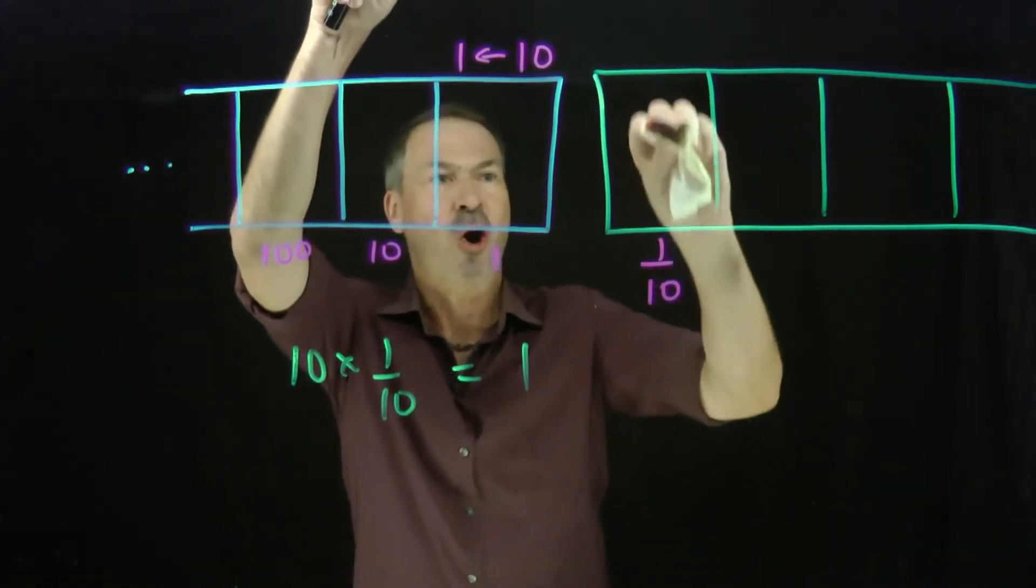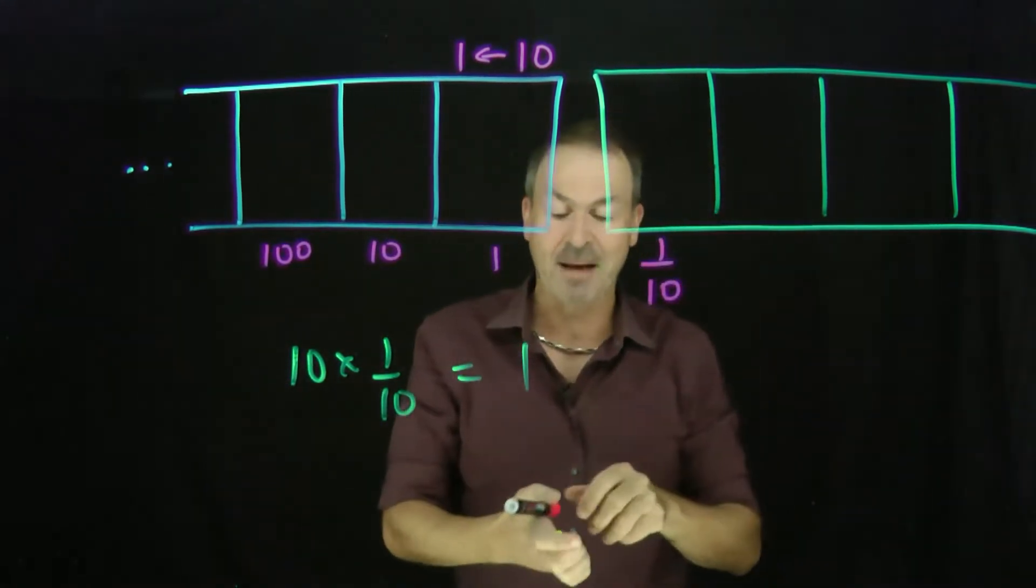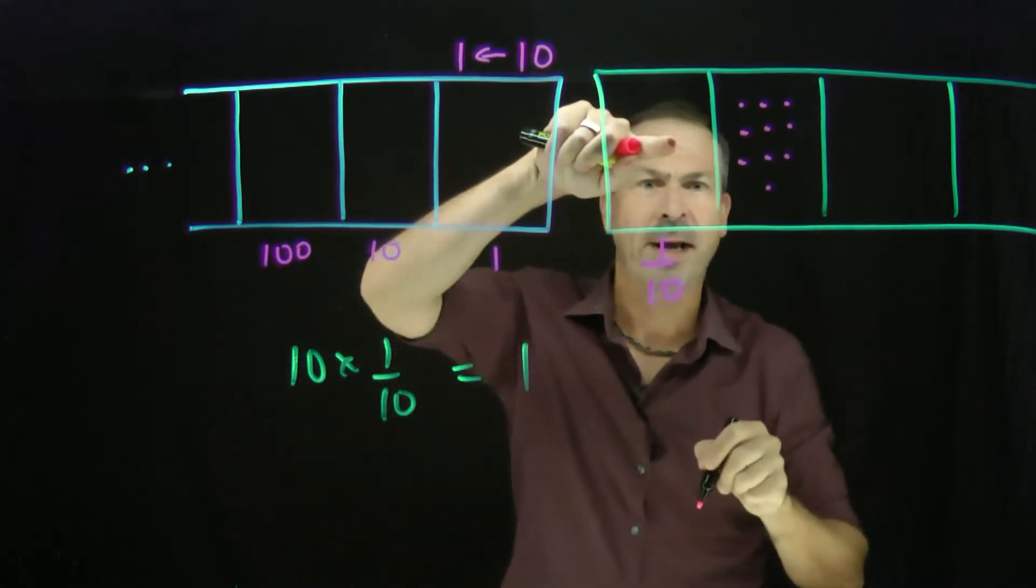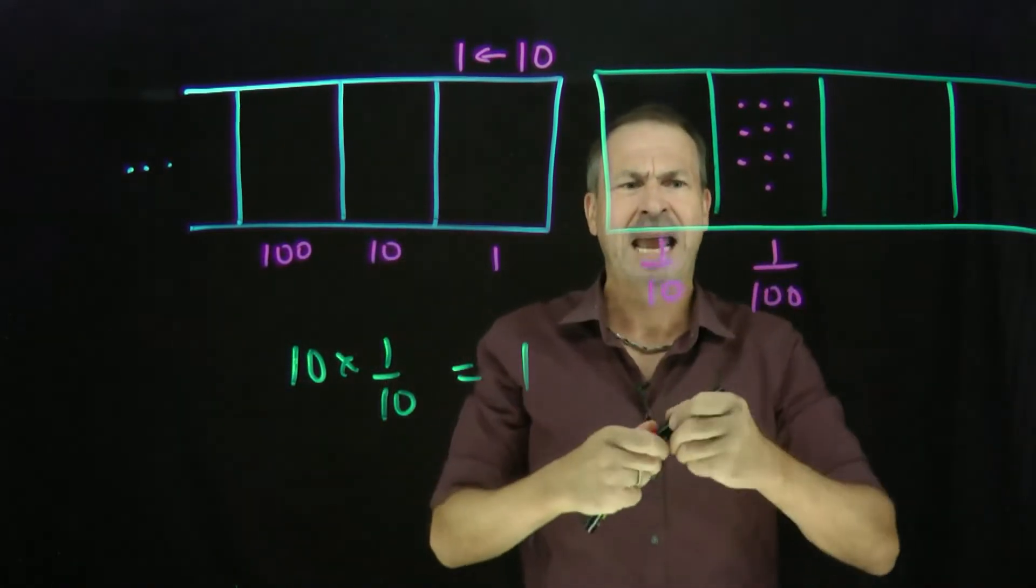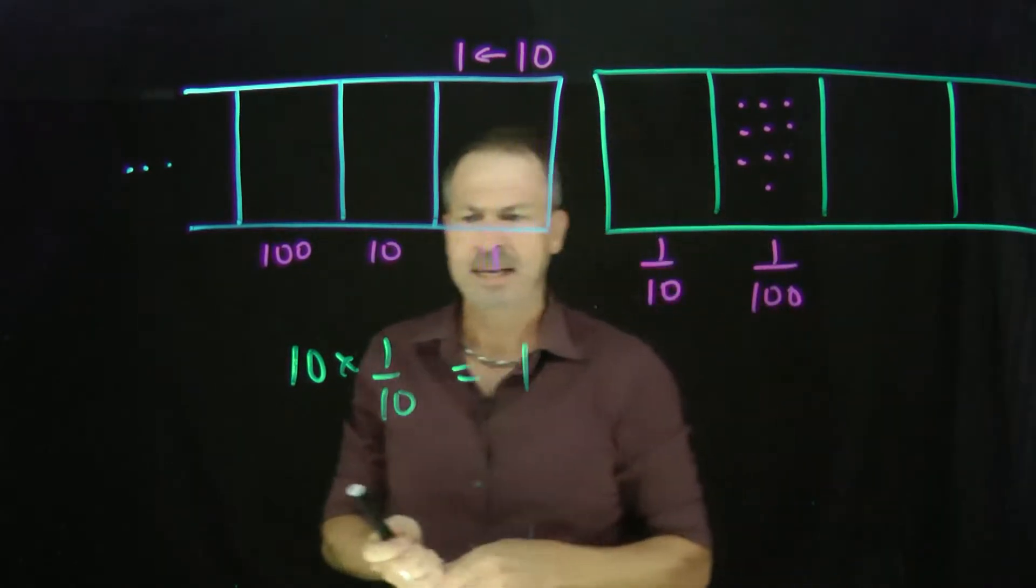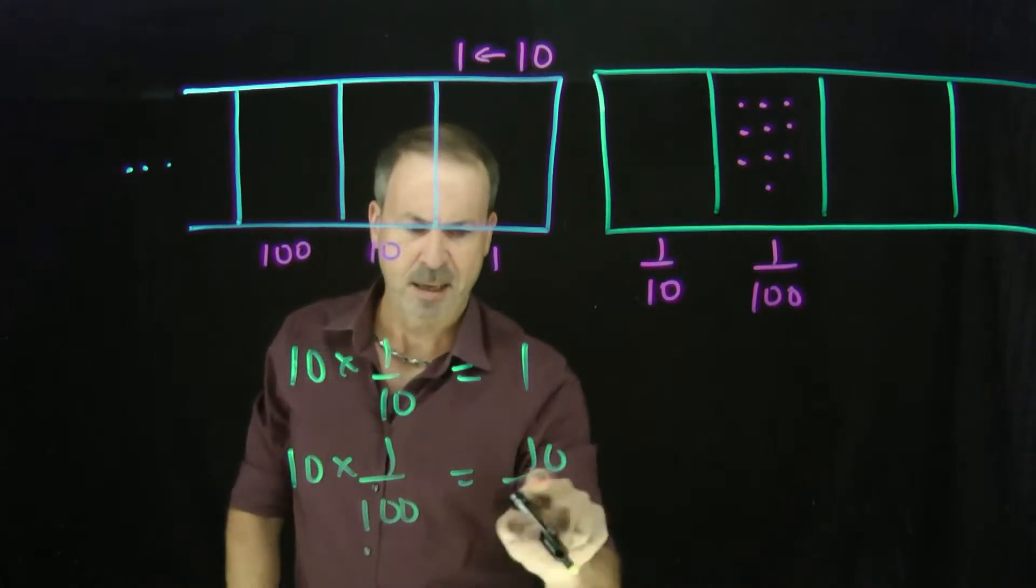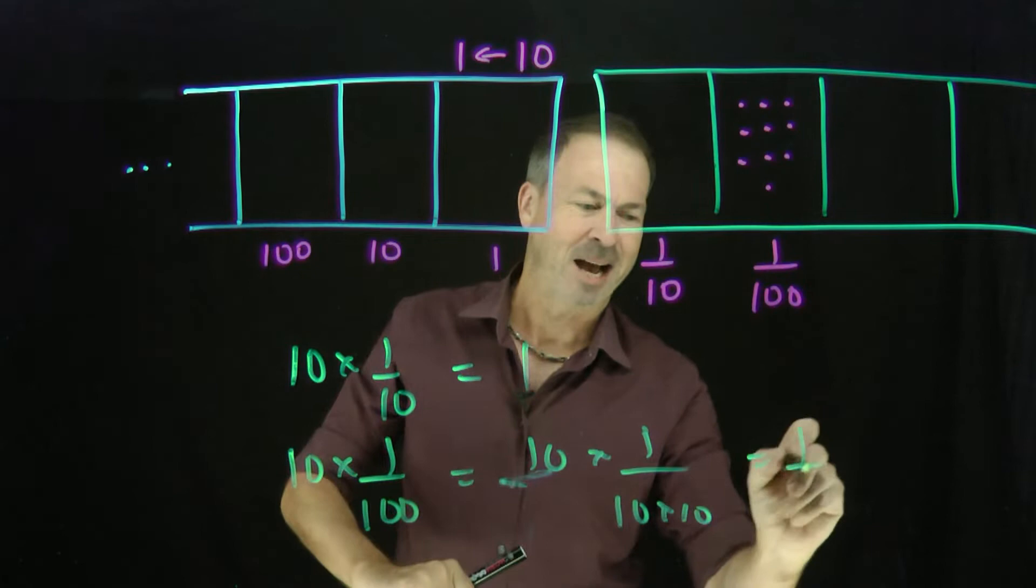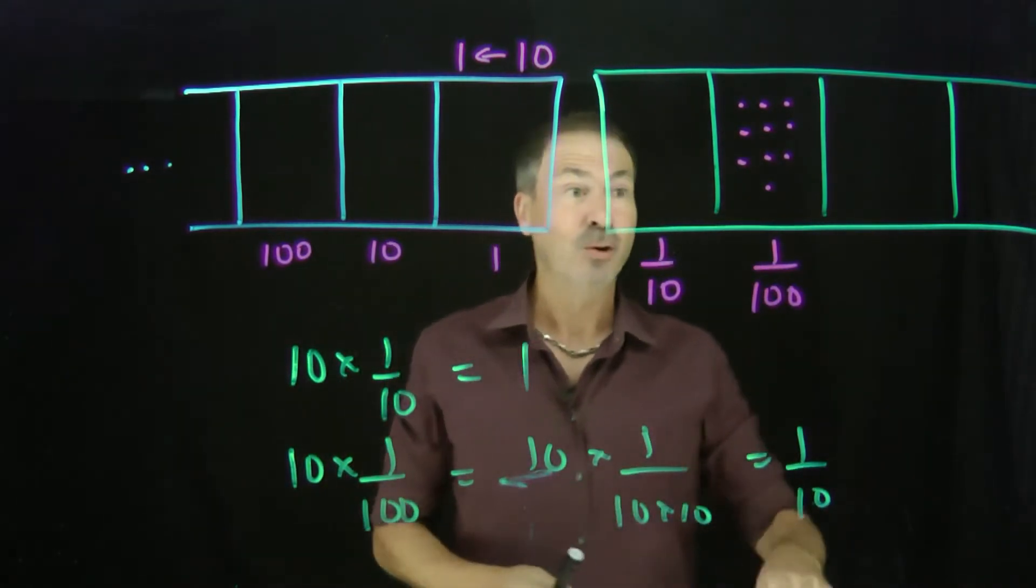Alright, which now makes me wonder about dots over here. 10 of these, whatever they are worth, make 1 tenth. So 10 of these would make 1 tenth, which makes me think 1 hundredth. Am I right? Are 10 one-hundredths the same as 1 tenth? Let's try now. 10 one-hundredths, that would be 10 times 1 over 10 times 10. Yes, that cancels out to 1 tenth. 10 one-hundredths is indeed 1 tenth. Great!